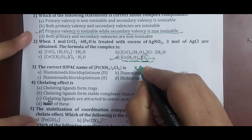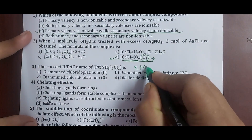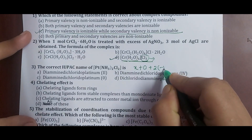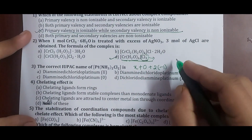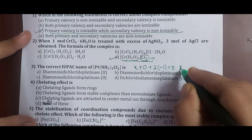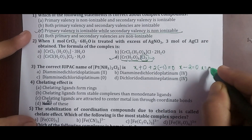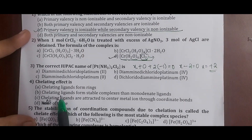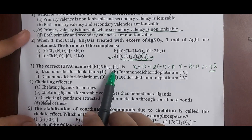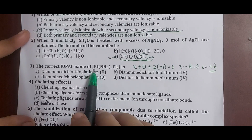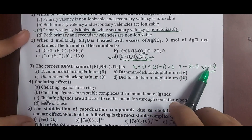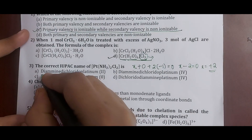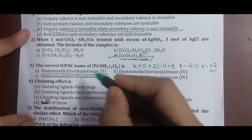The oxidation state of platinum is +2. There are two amines, so 'diammine'; two chlorido ligands give 'dichlorido'. It is a neutral complex so 'platinum'. The oxidation state is written as Roman numeral II. The correct IUPAC name is diamminedichloridoplatinum(II), which matches the first option.